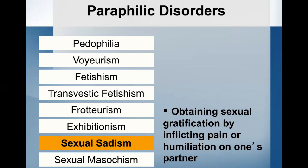Sexual sadism involves six months of recurrent and intense sexual arousal from the physical or psychological suffering of another person. They have either acted on these with a non-consenting person, or the sexual urges or fantasies cause clinically significant distress or impairment. This would include the idea of the dominatrix, S&M, bondage, whips, or humiliation like making somebody bark like a dog. The prevalence is unknown and largely based on individuals in forensic settings. Depending on the criteria used, prevalence has been thought to vary as widely as two to 30 percent. Among civilly committed sexual offenders in the US, less than 10 percent have sexual sadism, but among those who have committed sexually motivated homicide, the rates of sexual sadism range from 37 to 75 percent.